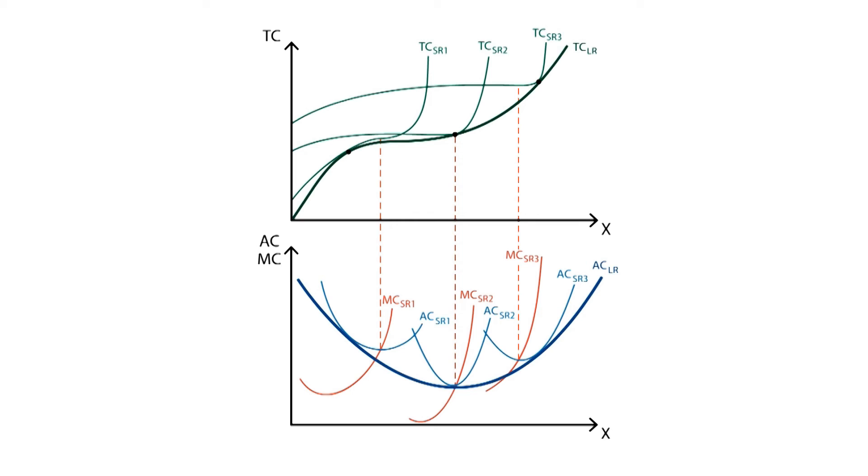When we draw straight lines from the points where the short-run total cost curves are tangent to the long-run total cost curve towards the lower graph, we will see that they will reach the long-run average cost at the exact points where they are tangent to their respective short-run average cost curves.